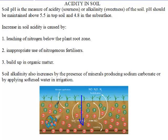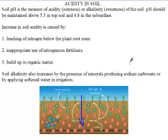On the other end, alkalinity can be increased by the presence of minerals producing sodium carbonate, or calcium carbonate — which is limestone. The presence of such minerals in the soil can increase alkalinity. When we also apply softened water in irrigation, with time we increase the alkalinity of the soil.